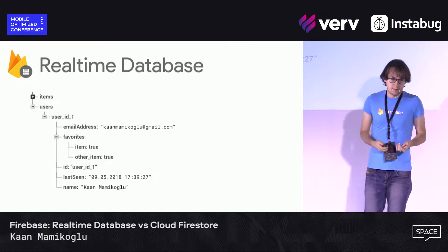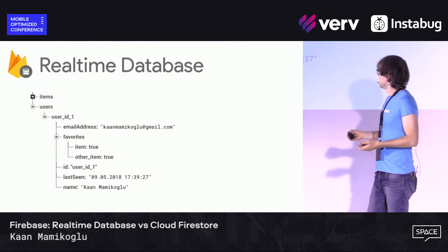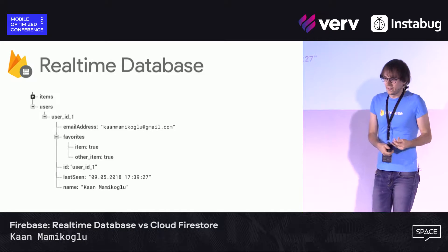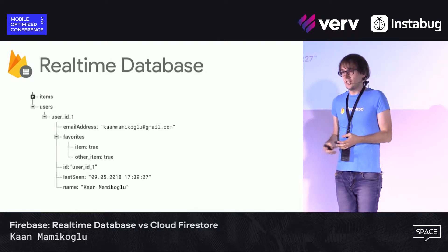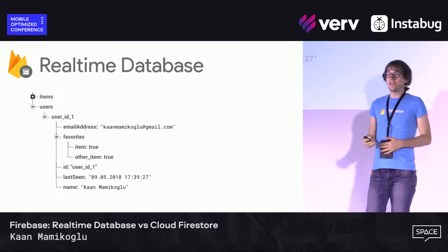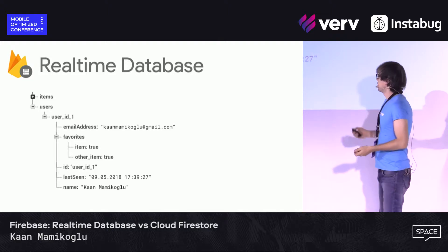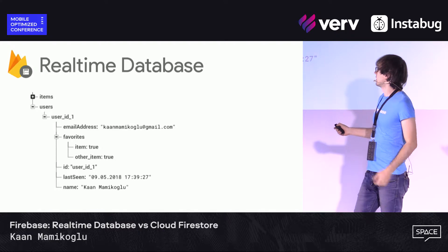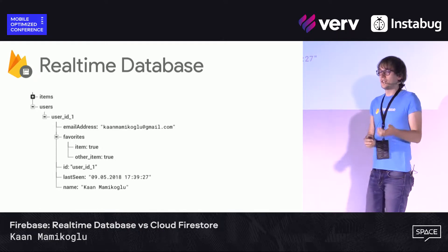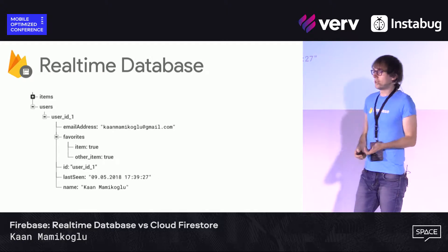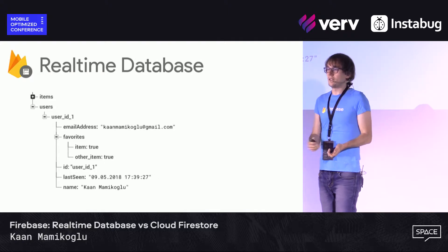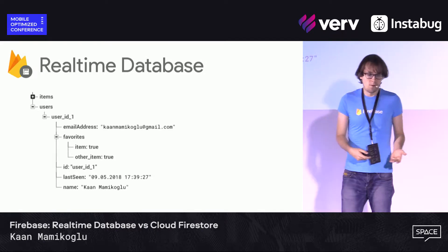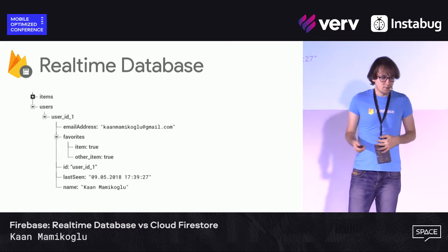Let's look at how it appears on the console. It's pretty much a JSON file. Each of these objects — items and users — are JSON objects, and you can use pretty much everything that you can use with JSON.